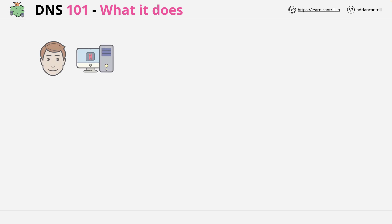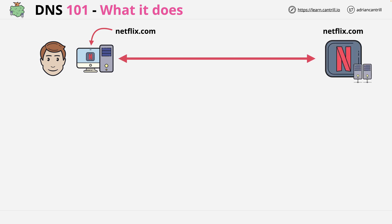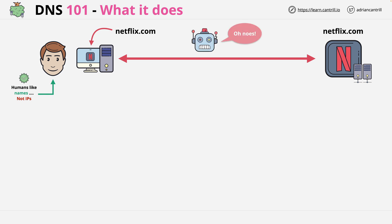When you access any website, you type the name into your browser — for example, www.netflix.com. You might imagine that the name is used to connect to the Netflix servers and stream your movie or TV show. But that's not actually how it or any internet app generally works. Simply put, humans like names because they're easy to remember. But networks or servers, not so much. To communicate with Netflix, your computer and any networking in between needs the IP addresses of the Netflix servers.